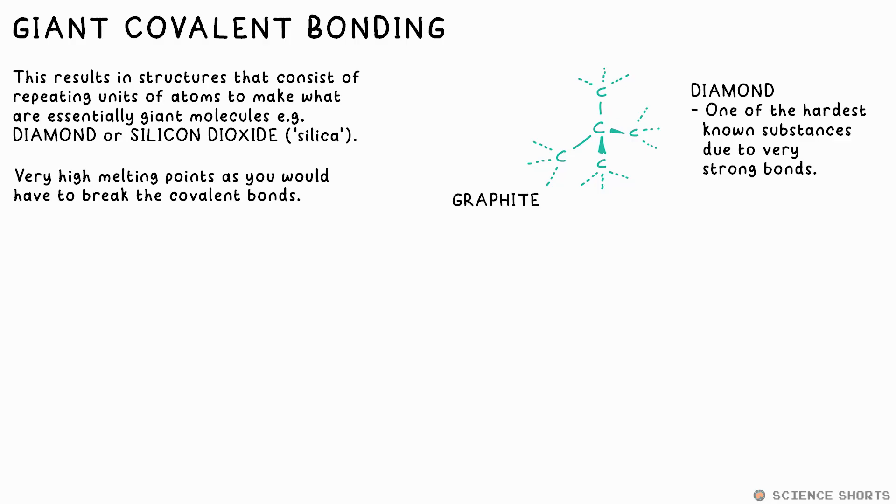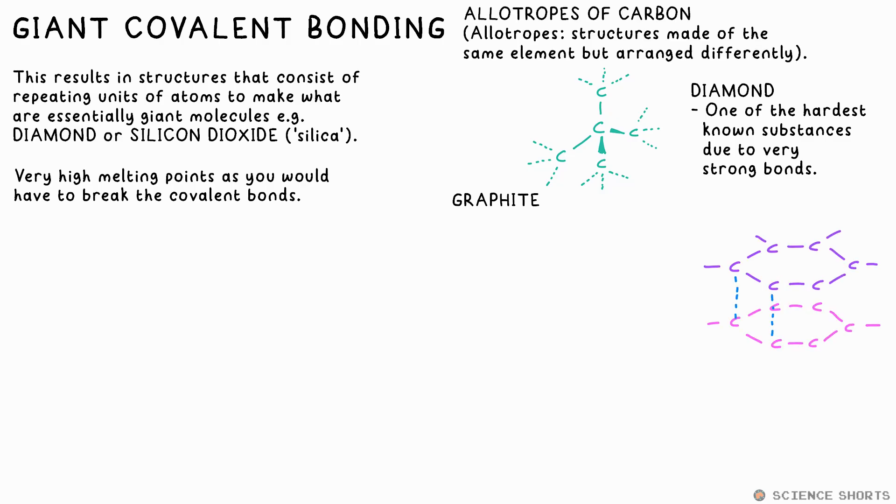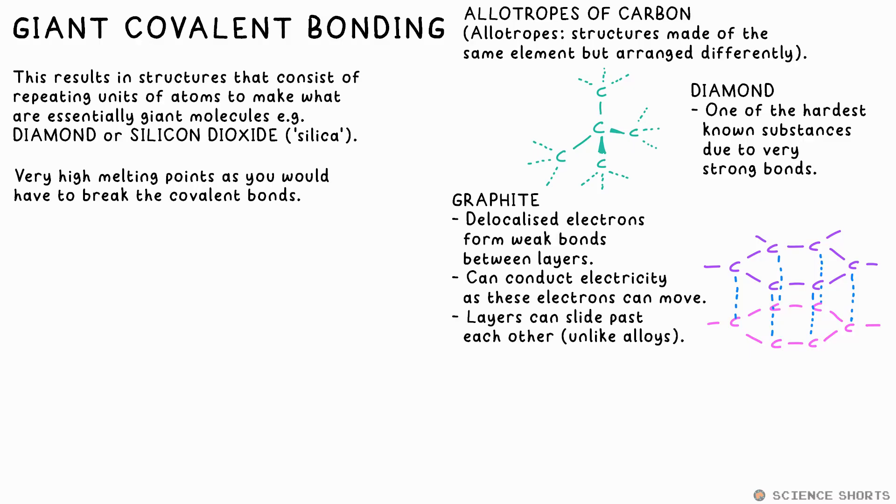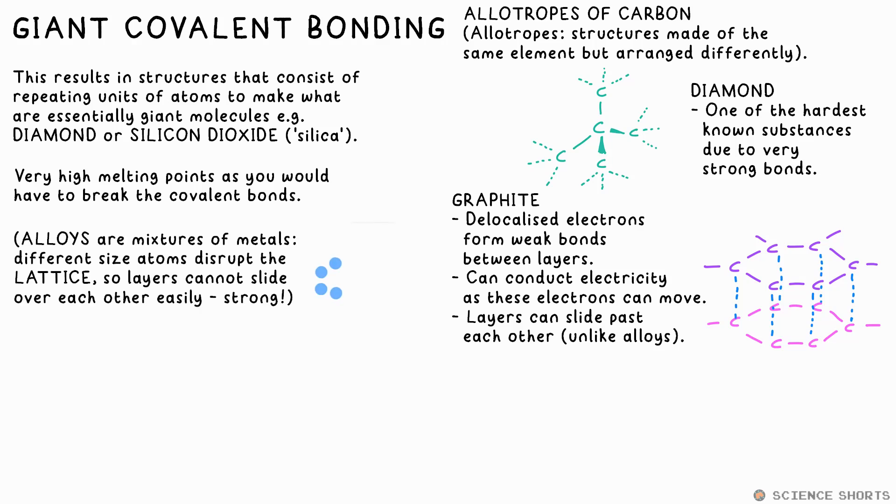Graphite consists of layers of carbons with three covalent bonds each in a hexagonal structure. Where's the carbon's fourth bond, you might ask? Well, the spare delocalized electrons form special weak bonds between the layers, which means that this can actually conduct electricity because the electrons can move between the layers. And it also means the layers can slide over each other easily too, which is why it's used for pencils. As a side note, it's the opposite with metal alloys. They're stronger than pure metals because having mixtures of different metals means we have different sized atoms. And that disrupts the regular lattice, so layers can't slide over each other as easily.